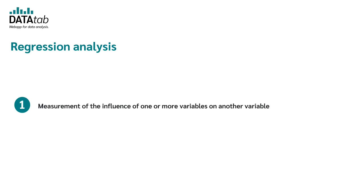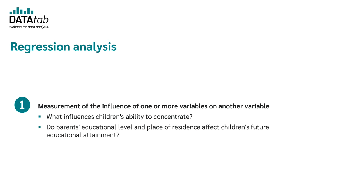Let's start with measuring the influence of one or more variables on another. In the context of research, you might be interested in what influences children's ability to concentrate — whether certain parameters positively or negatively affect it. Another example would be investigating whether the educational level of parents and place of residence influences the future educational level of children. This area is strongly research-based with many applications in the social and economic sciences.